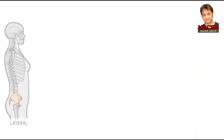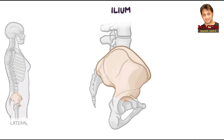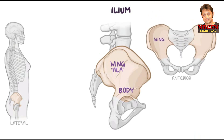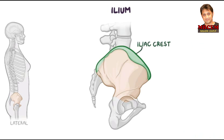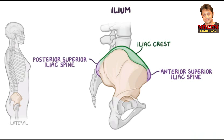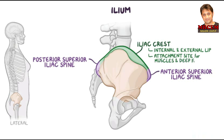The ilium is the largest and most superior part of the hip bone, and it can be divided into a body and a wing. The wing, or ala, of the ilium has a lateral and a medial surface, a crest, and two borders, anterior and posterior. Superiorly, there's the iliac crest, which begins at the anterior superior iliac spine and extends posteriorly to the posterior superior iliac spine. The crest has an internal and external lip, and serves as an important attachment site for muscles and deep fascia.